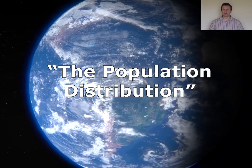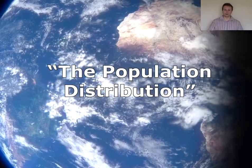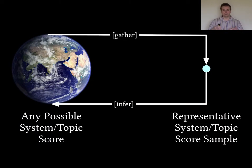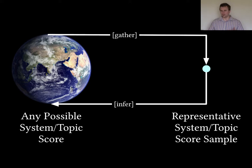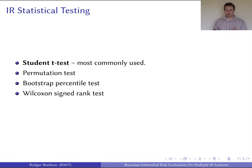In statistical inference, we think about how we can make inferences based on what is observable over the entire universe of values based on what we can adequately sample. We're sampling from the population distribution and have a representative sample of information retrieval scores. In an IR score, we've got combinations of system and topic effects which form an effectiveness score. What we typically use is a student t-test in IR at the moment. However, there are other tests like the random permutation test and bootstrap that are non-parametric and don't have the same assumptions as the student t-test.